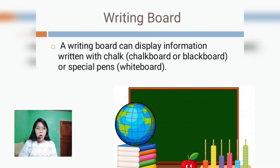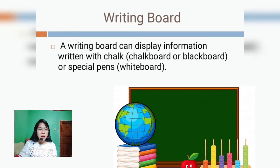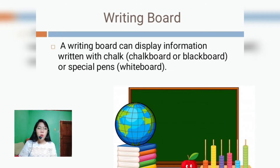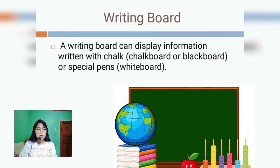Let's begin with the first example of an instructional material: the writing board. A writing board can display information written with chalk on a chalkboard or blackboard, or even with special pens on a whiteboard. Although there are usually more effective methods of transmitting information, the writing board is still the most commonly used visual aid, especially in a common classroom.